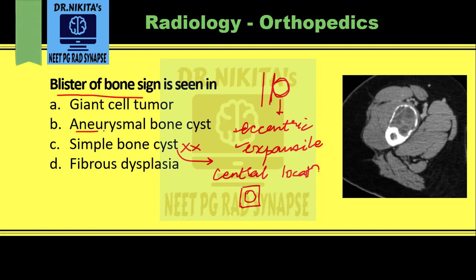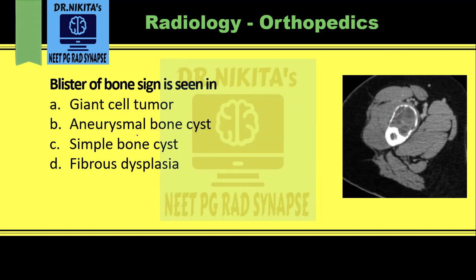Eccentric and expansile is a feature of both aneurysmal bone cyst and giant cell tumor, but blister of bone sign is specifically the term used for aneurysmal bone cyst. As you can see in this CT scan, the bone in cross-section shows a lesion causing ballooning or blister-like appearance — eccentric and expansile. So blister of bone sign is seen in aneurysmal bone cyst.